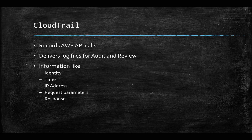Now we'll talk about CloudTrail. CloudTrail is a web service that records AWS API calls for your account and delivers log files for audit and review purposes. The recorded information includes things like identity, time, IP addresses, request parameters, and the response elements sent back.